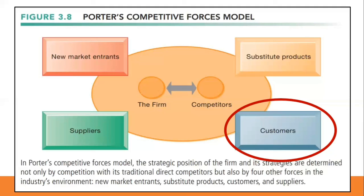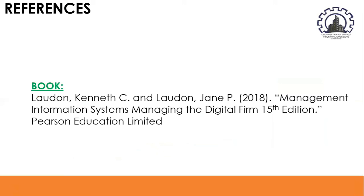Finally, we have suppliers. The market power of suppliers can have a significant impact on firm profits, especially when the firm cannot raise prices as fast as suppliers can. The more different suppliers a firm has, the greater control it can exercise over suppliers in terms of price, quality, and delivery schedules. For instance, manufacturers of laptops almost always have multiple competing suppliers of key components such as keyboards, hard drives, and display screens. This is all about Porter's competitive forces model — if your business would like to gain competitive advantage, you can employ this model. If you have questions, please let me know in the comment section below. If you like this video, please don't forget to subscribe and hit the bell button for the latest updates. Thank you.